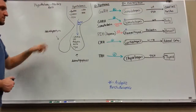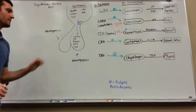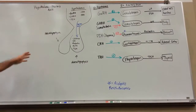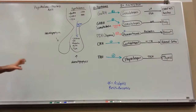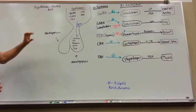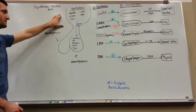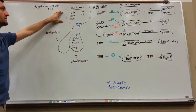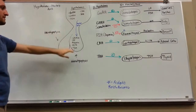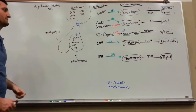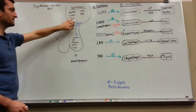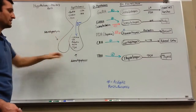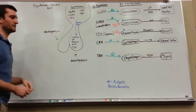So we just talked about the hormones of the neurohypophysis, so now let's take a look at the hormones of the adenohypophysis. We have the hypothalamus, which is going to have five hormones that affect the adenohypophysis. They're going to travel down through the portal vein, and then in the adenohypophysis you're going to have five different cell types.